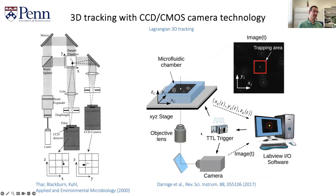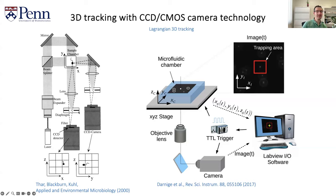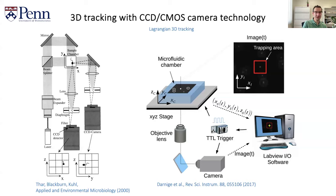Then people started building on this, and around 2000 people started tracking bacteria using CCD cameras for the first time. Instead of using photomultiplier tubes, you could have a two-dimensional array of sensors. Using some clever optics — especially a little diaphragm — that allows you to project the position of the cell in the XZ plane, as well as a second CCD camera to look at the sample from the side, giving motion in the YZ plane. Together, you could reconstruct the three-dimensional trajectory of these bacteria as they swim along.